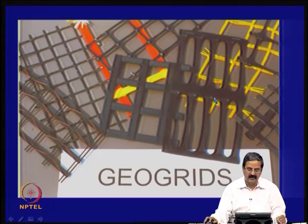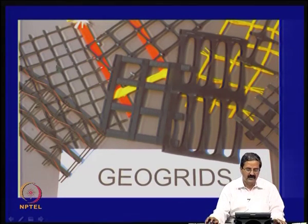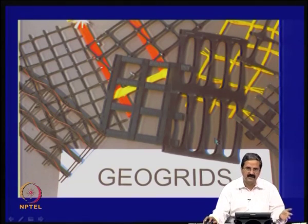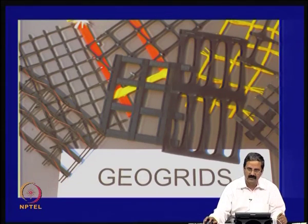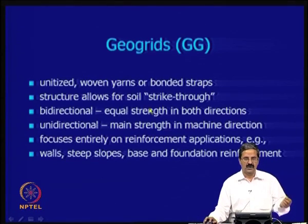Geogrids are a textile member. We have varieties — bi-oriented geogrids, in which the size is the same in both directions and load distribution is equal. This is very good for pavement applications or bearing capacity improvement where the load is applied and distributed properly. Mono-oriented geogrids have tensile strength action in one direction, which is good for reinforced soil walls or slopes where the force is in one direction and you want to improve stability. Geogrids are unitized woven yarns or bonded straps; their structure allows for soil strike-through, meaning there is soil-to-soil contact as well as soil-to-grid contact.